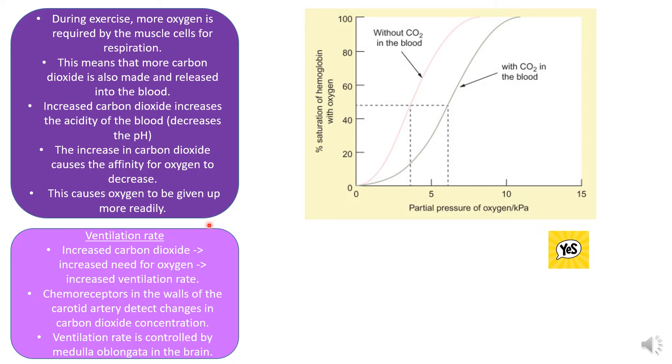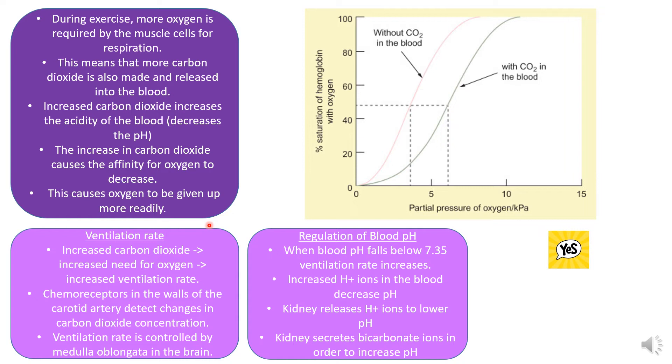As respiration increases and the amount of carbon dioxide in the blood increases, there's an increased need for oxygen, so the body increases ventilation or breathing rate. The chemoreceptors in the walls of the carotid artery in the neck detect the changes in the carbon dioxide concentration. They send messages to the brain in order to increase the ventilation rate if there's a high concentration of carbon dioxide in the blood. This is controlled by the medulla oblongata in the brain.